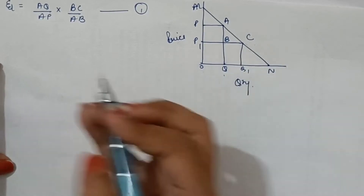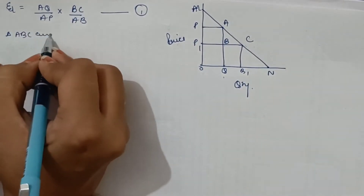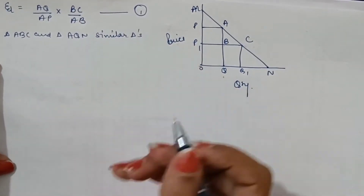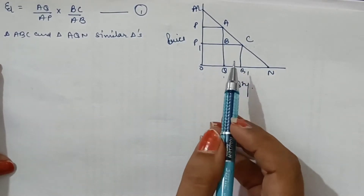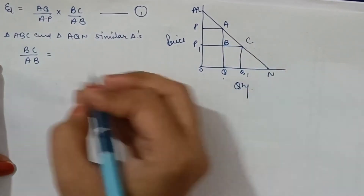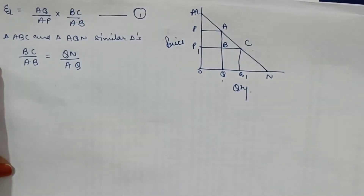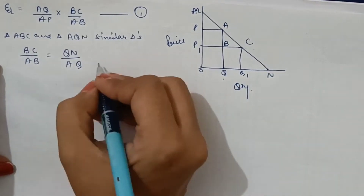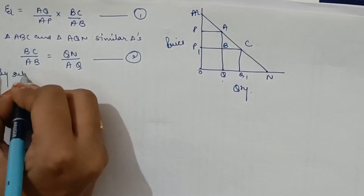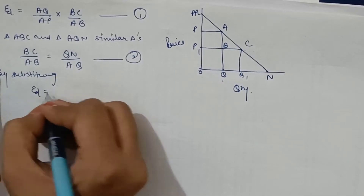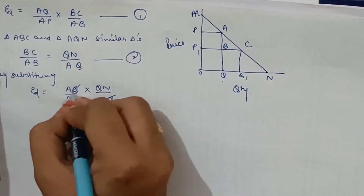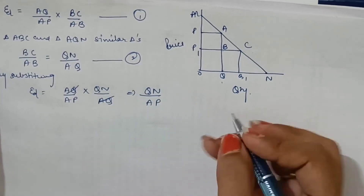If we substitute the value of BC/AB from equation number 2 into equation number 1, by substituting, we will get: E_D = (AQ/AP) × (QN/AQ), which simplifies to QN/AP. And QN and AP involve two triangles: triangle MPA and triangle AQN. Again, triangles MPA and AQN are similar triangles, because one set of their sides are in a ratio QN/AP.